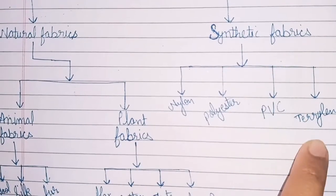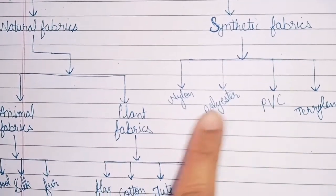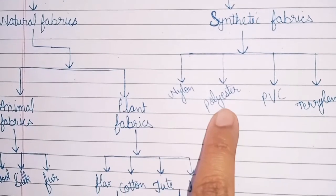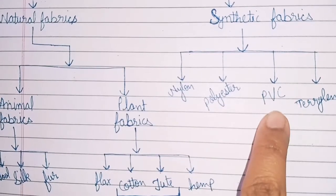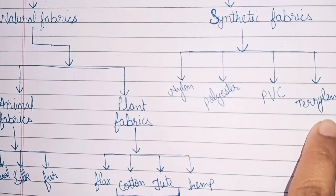Examples of synthetic fibers include nylon, polyester, PVC, and terrylene.